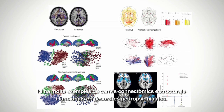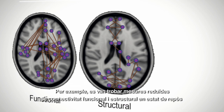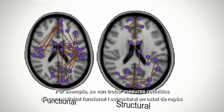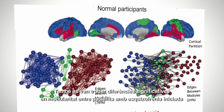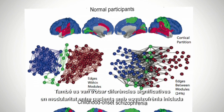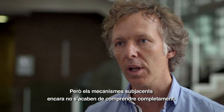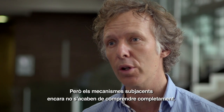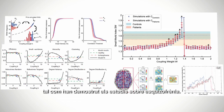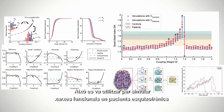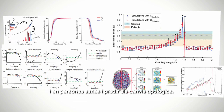There are many examples of structural and functional connectomics changes in neuropsychiatric disorders. For example, reduced resting state functional and structural connectivity measures were found in two independent studies of patients with schizophrenia. Significant changes in modularity were also found between patients with childhood onset schizophrenia and a control population, but the underlying functional mechanisms are not yet fully understood. Whole brain computational modelling is very useful here, as demonstrated by studies in schizophrenia that simulated functional networks and predicted topological changes.